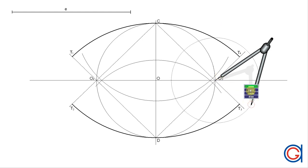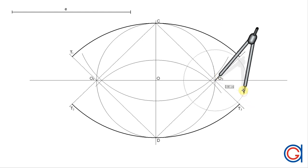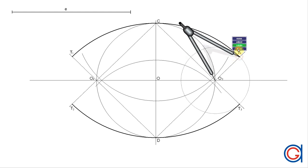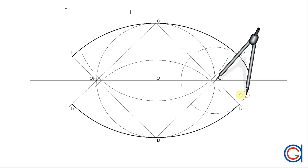Finally, to complete our oval, setting our compass to the point O3 with radius O3 T4, we join the tangent points T4 to T3 in a thicker line.